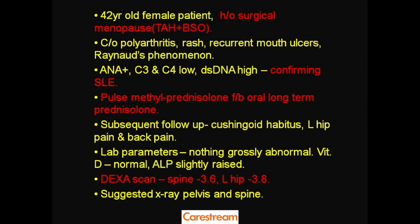Anti-nuclear antibodies indicate auto-antibodies which are mistakenly being formed, attacking the healthy cells of the tissue — meaning she is having some autoimmune disease. C3 and C4 were low, indicating deficiency in the complement system, and anti-double-stranded DNA (anti-dsDNA) was quite high, which classically confirms active lupus erythematosus. The patient was started on pulse methylprednisolone followed by oral long-term steroids.